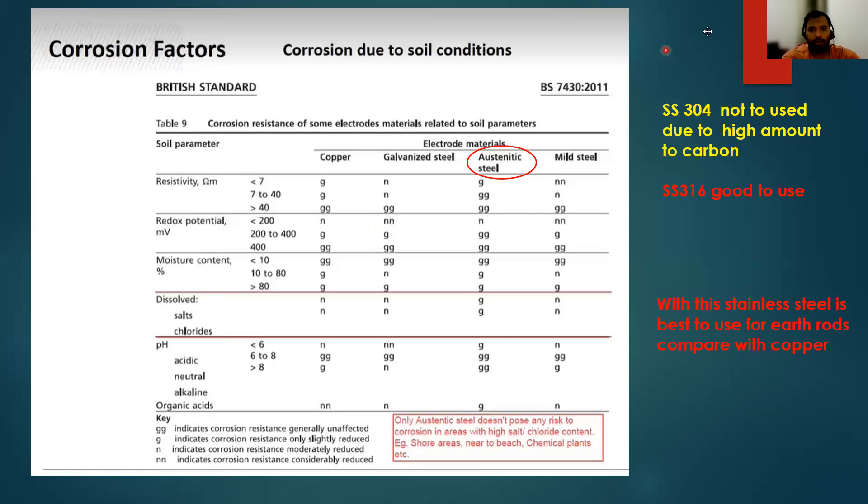Austenitic steel is nothing but stainless steel. Stainless steel, you have different types of grades. Mostly a few suppliers are using SS304. It should not be used because it has high carbon content. If there is high carbon content, then it will not show these values. You have to use SS316. It is a very good material.